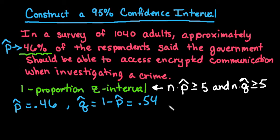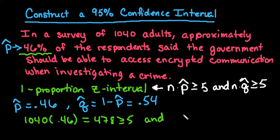It's always a good idea to show out your conditions that you did check this. So n would be the 1,040 times p̂ of 0.46. This ends up giving us 478, which is greater than or equal to 5. And we would also check the other one, 1,040 times 0.54, which gives us 562 failures, which is also greater than or equal to 5.